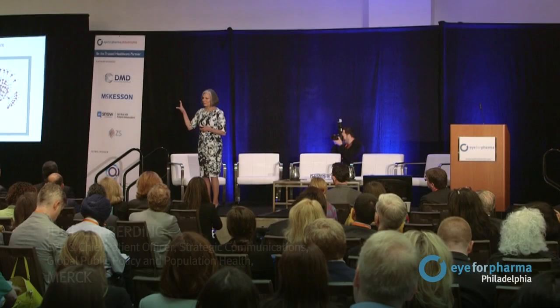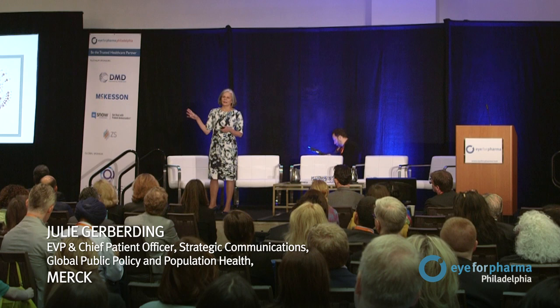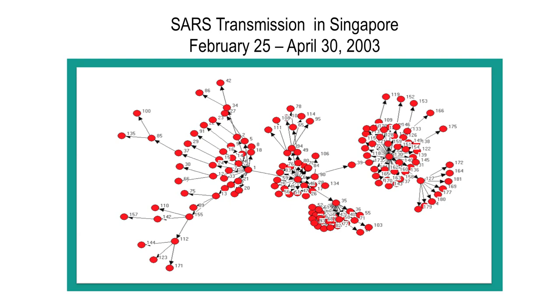This is a map of the outbreak of SARS in Singapore way back in 2003. As you can see, there are clusters of patients — each red dot is a SARS patient. And there are connectors that link one cluster of patients to another. Those linkers are either patients who were discharged, infected from one facility, and then readmitted to another facility, initiating a second wave of transmission.